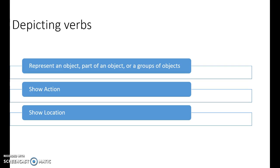Depicting verbs show either action or location. They show the movement of an object or a group of objects. So if you think about the one classifier that shows a person walking by or one person standing in a place or one person walking up to another, this could be cars, groups of people moving in different directions.